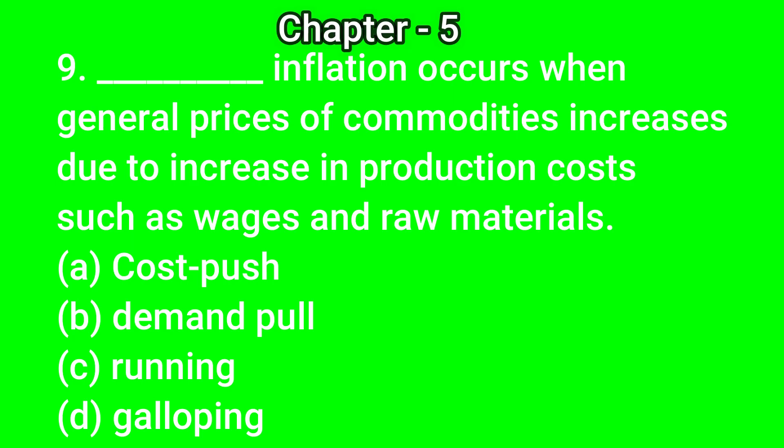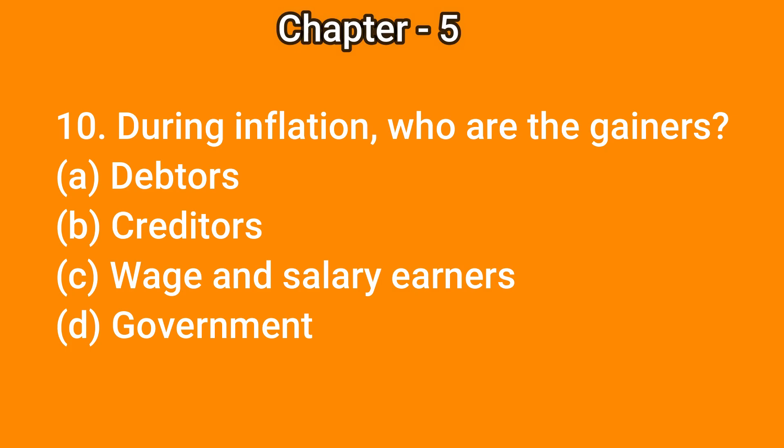Question number 9: Dash inflation occurs when the general prices of commodities increase due to increase in production costs such as wages and raw materials — A) cost push, B) demand pull, C) running, D) galloping. The correct answer is A) cost push. Question number 10: During inflation, who are the gainers? A) debtors, B) creditors, C) wage and salary earners, D) government. The correct answer is A) debtors.